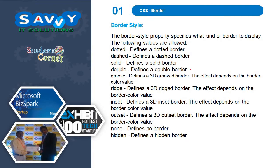Now we need to discuss about borders. The border style property specifies what kind of border to display. The following values are allowed: dotted defines a dotted border, dashed defines a dashed border, solid defines a solid border, double defines a double border.